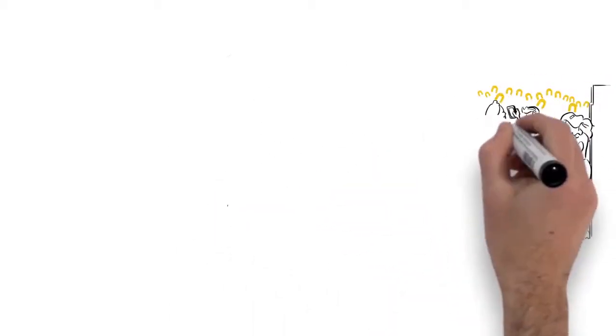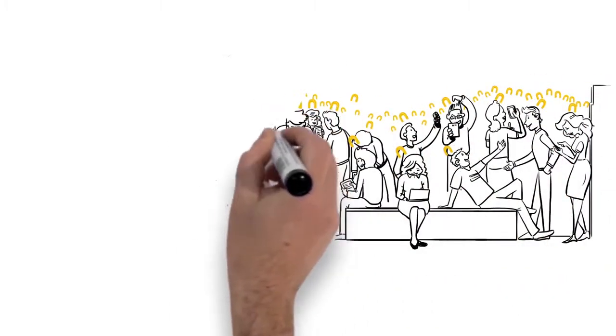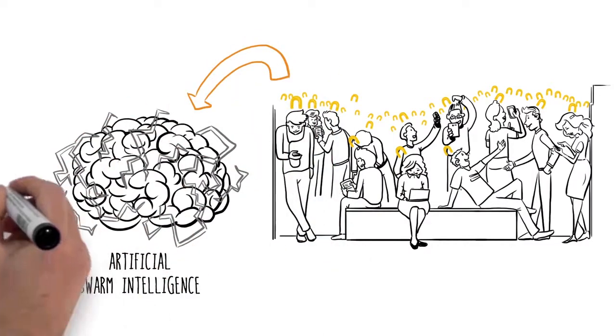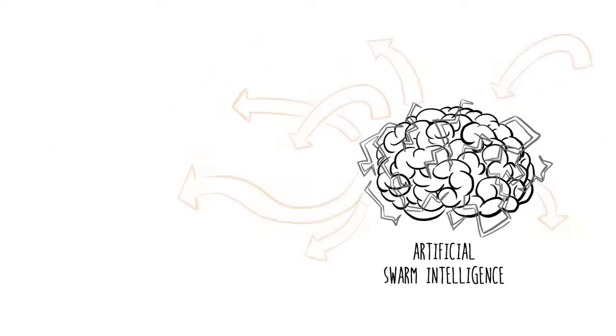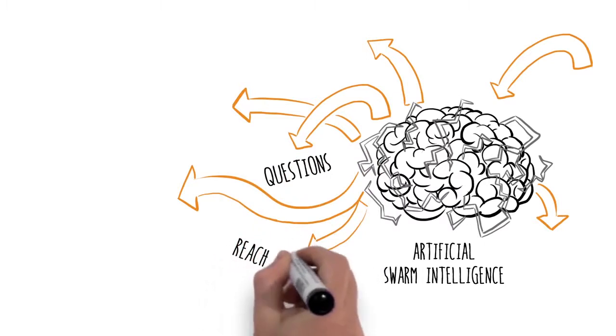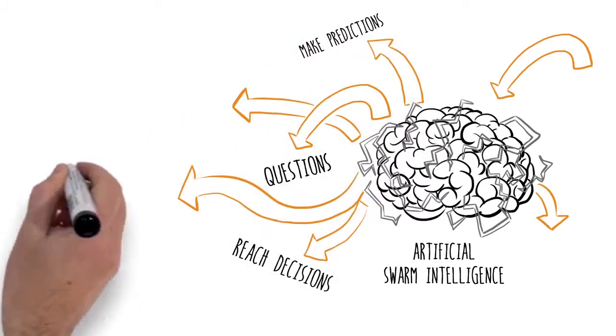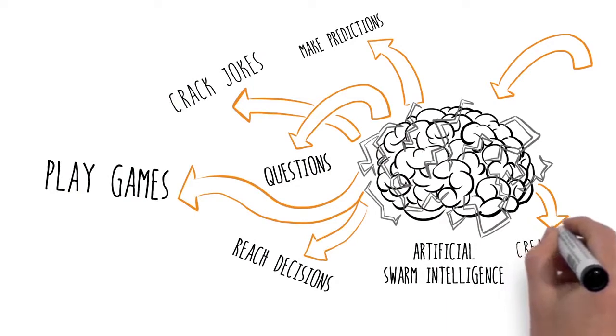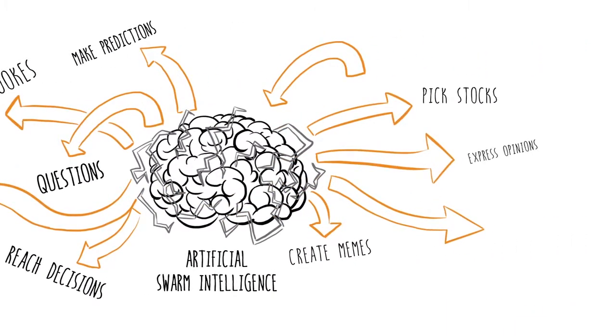Researchers at Unanimous AI have developed technology to allow any online group to form an artificial swarm intelligence. And ask it questions, reach decisions, make predictions, play games, crack jokes, create memes, pick stocks, express opinions, solve problems.